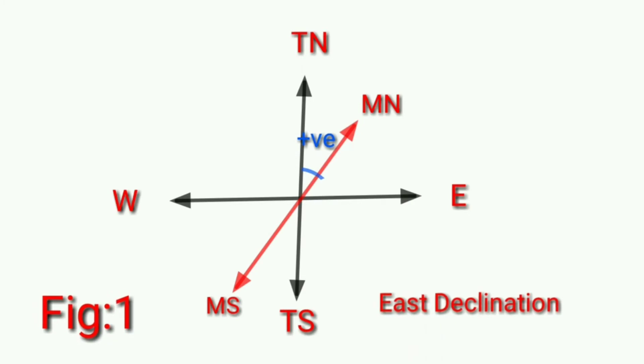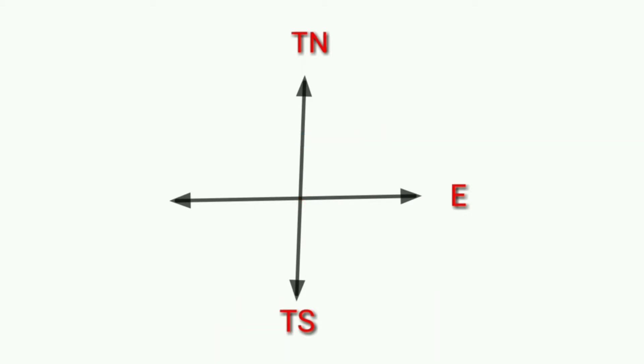This is east declination, positive. And now west declination, negative sign.